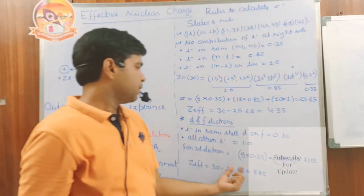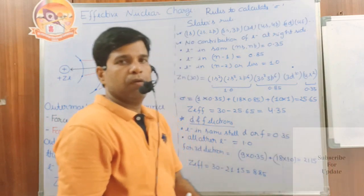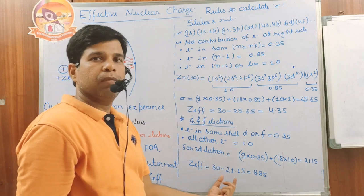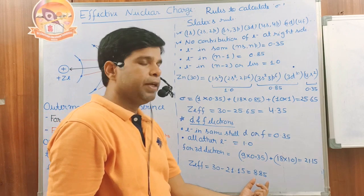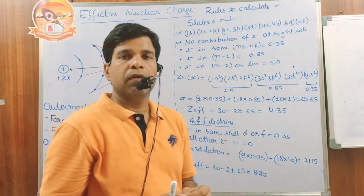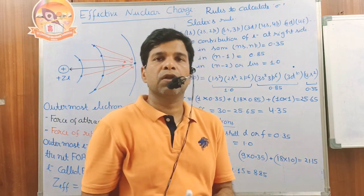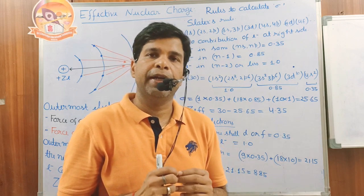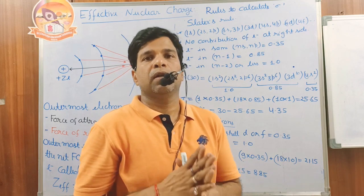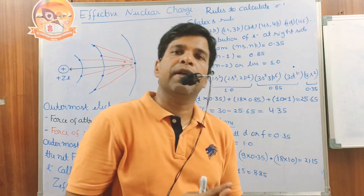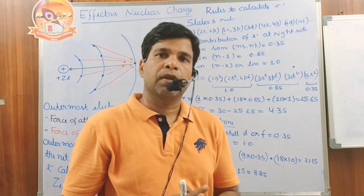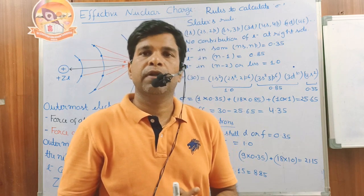So the Sigma value becomes 21.15. Then Z_effective = 30 minus 21.15 = 8.85. This means one of the 3d electrons experiences an effective nuclear charge of 8.85 protons. This is how we calculate Sigma and the effective nuclear charge using Slater's rule.